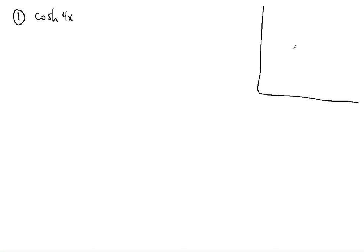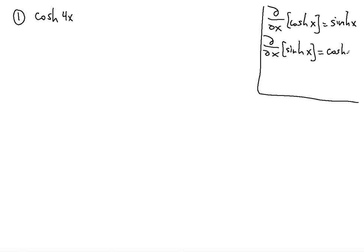As a side note, in the top right-hand corner, the derivative of cosh x is equal to sinh x. The derivative of sinh x is equal to cosh x. And the derivative of arc cosh of x — the inverse — is equal to 1 over the square root of x squared minus 1.